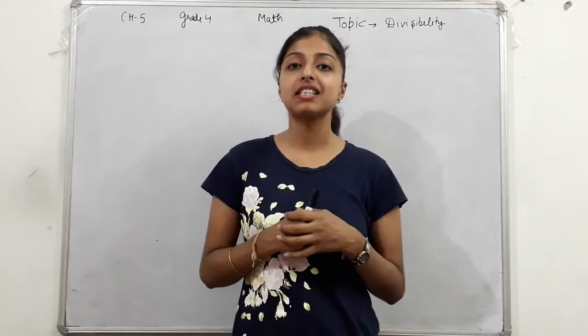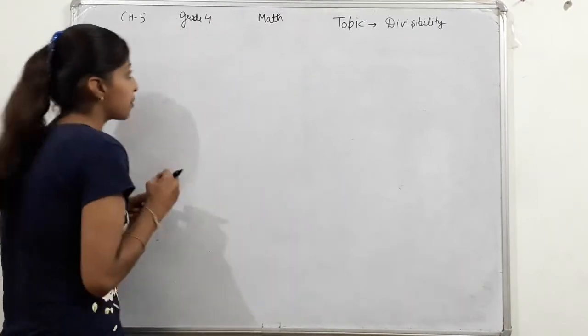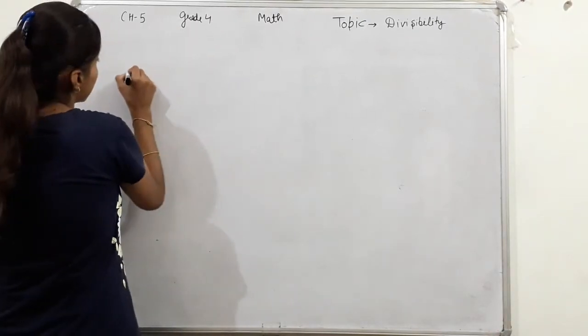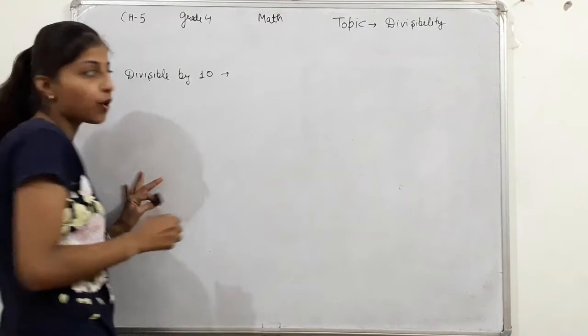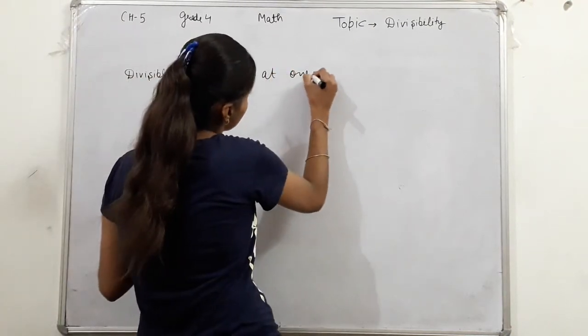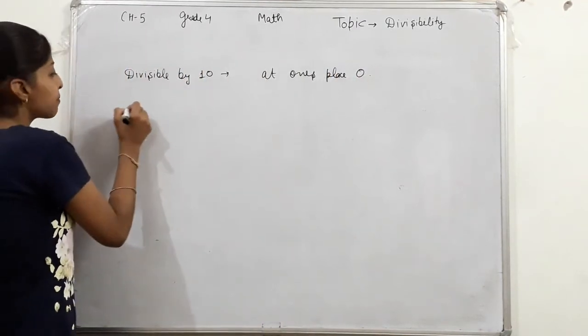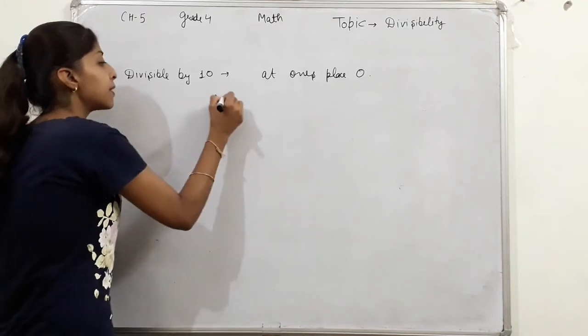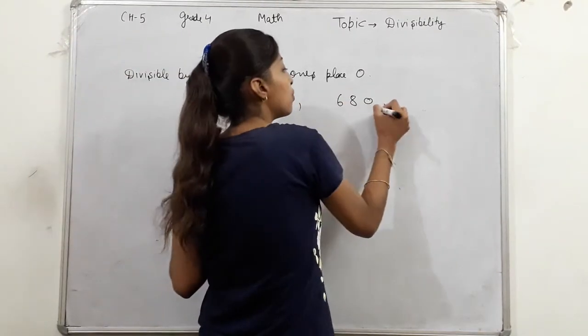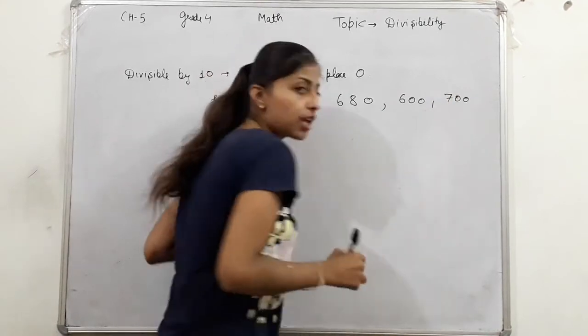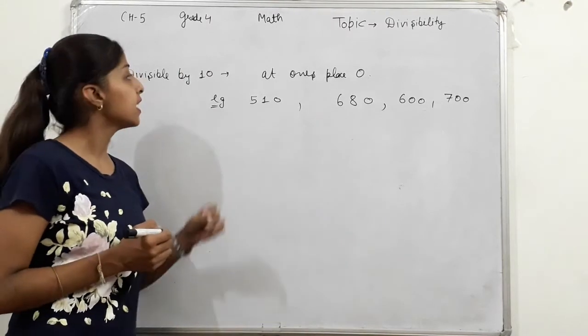So last lecture we did divisibility test. We discussed 2, 10 and 5. Divisible by 10 - at once place what should be there? Zero. Yes, or what concept was there?